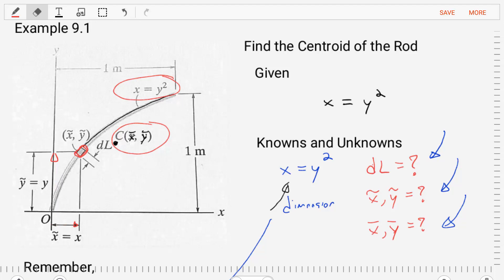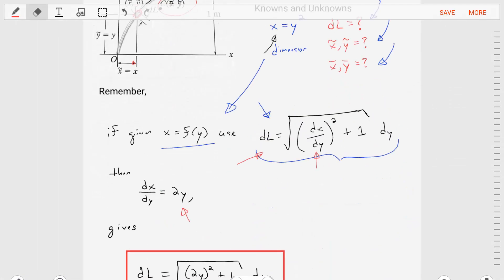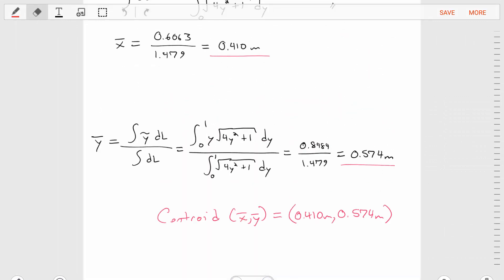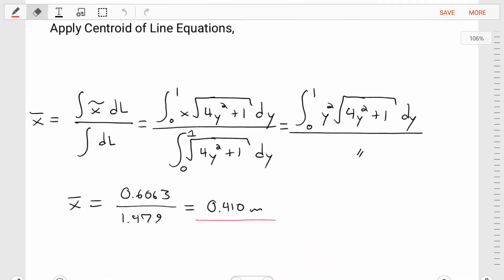So now we've got all of these unknowns taken care of, we can actually get to solving for the centroid. So let's apply the centroid of line equations. These equations are known, they come from the book, where x-bar is equal to the integral of x-tilde over the differential length, divided by the integral over the differential length. Let's put in the things that we now know. We know the x-tilde is equal to x. We know that the dL can be replaced with this expression, and we also can replace the dL with this expression in the denominator.